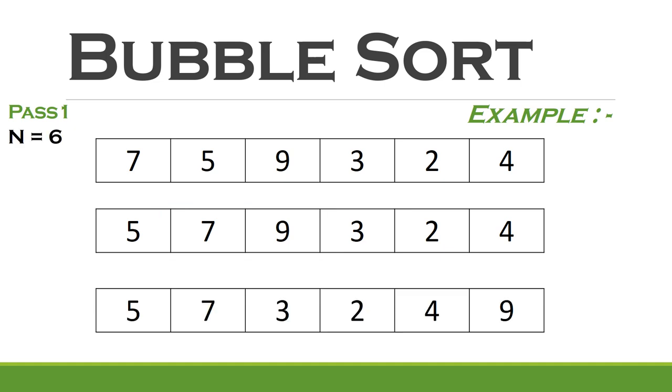So now I think it will be clear that in the next 3 comparisons of 9 with 3, 2, and 4, swaps will be needed. And with each swap, 9 will be pushed towards the end of the list.